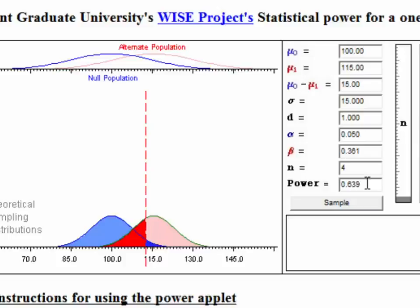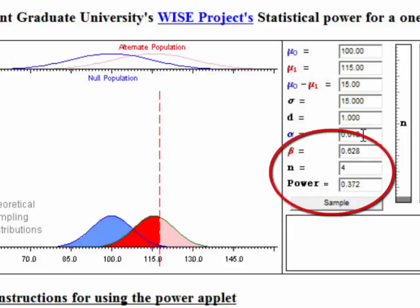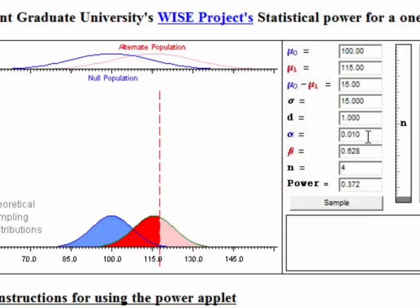Let's change the alpha level from 0.05 to 0.01 and see what happens to power. Notice — power went down. Why? Because the critical value under the null hypothesis was further out in the extreme, so it's more likely to make a type 2 error. The probability of making a type 2 error in this example is 0.628, and power is 0.372. Let's reset our values back to alpha equal to 0.05.